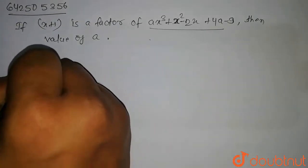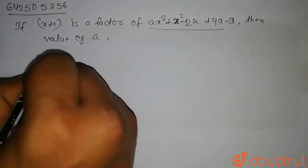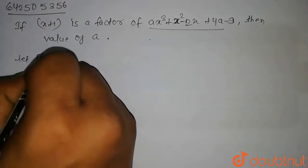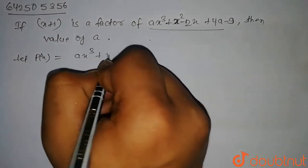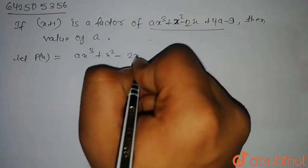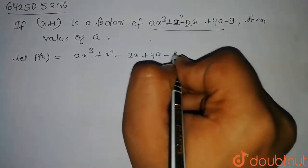So we have given, let polynomial P(x) is equal to a into x to the power 3 plus x square minus 2x plus 4a minus 9.